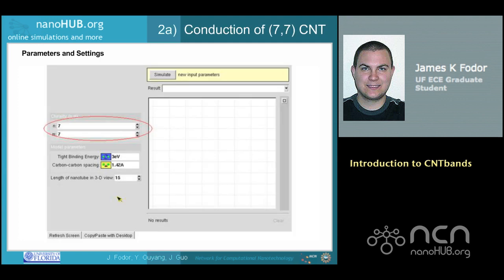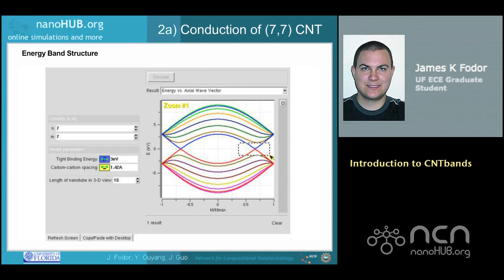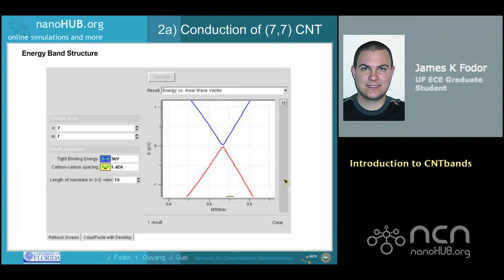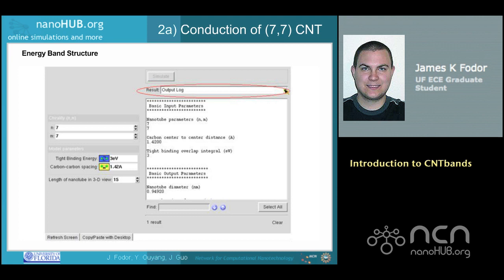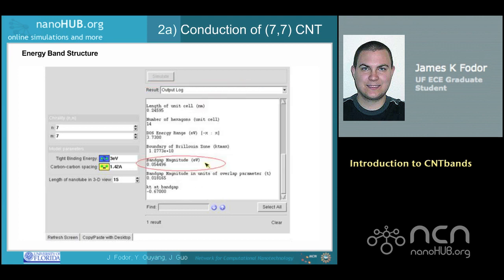For part A, simply open a new instance of the CNT bands program. The armchair CNT with chirality 7-7 is the default setting. Press simulate and the following E-K relationship will appear. At this point we can see that there are two valleys in the Brillouin zone. To determine if the CNT is metallic or semiconducting, zoom into the region shown. There is virtually no band gap, so we conclude that the CNT is metallic. You can also select the output log and scroll down to the band gap magnitude entry — the band gap is less than a tenth of an electron volt, confirming the CNT is metallic.